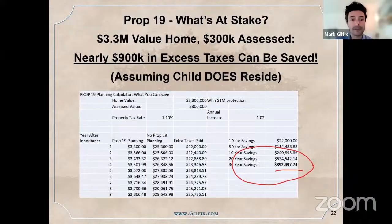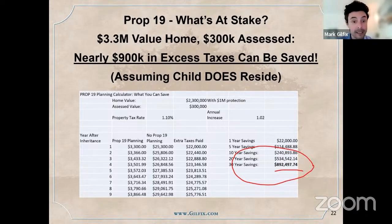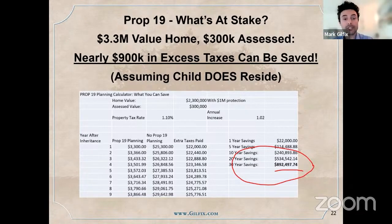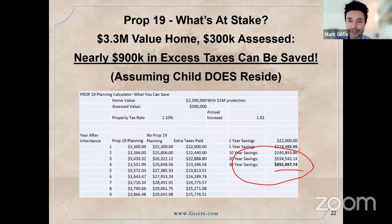We talked to her — it was too late to do anything. Once property taxes go up, you cannot get them to come back down. You have to plan ahead. For a $3.3 million home with a $300,000 assessed value where a child lives there, property taxes go up from $3,300 a year to over $25,000 a year. Over 10 years, that's $240,000 in extra property taxes. Over 30 years, that's almost $900,000.